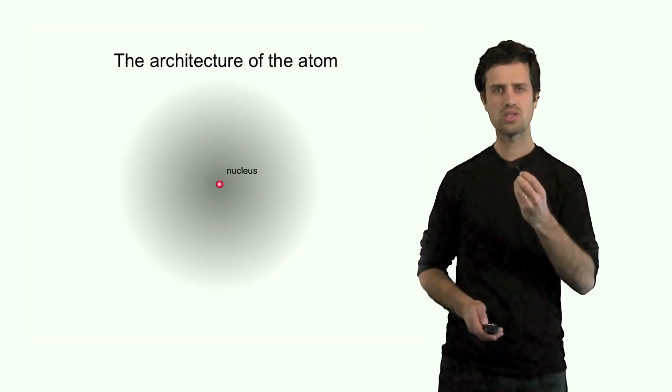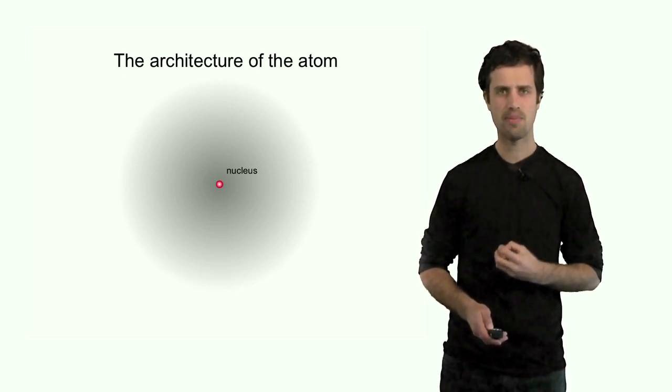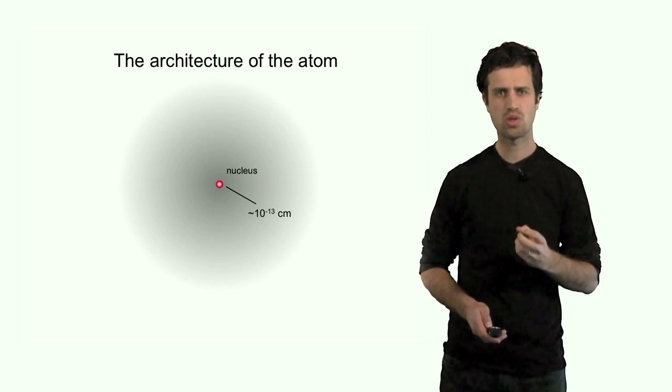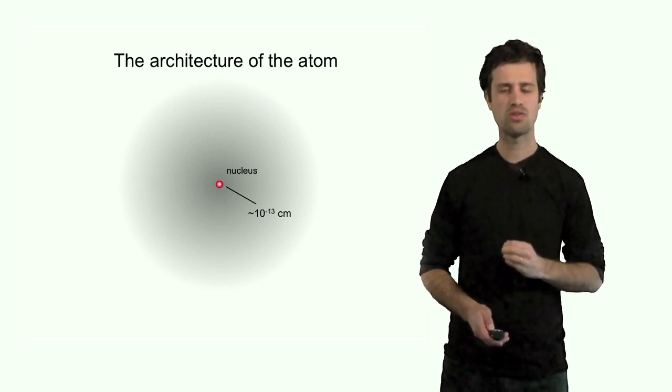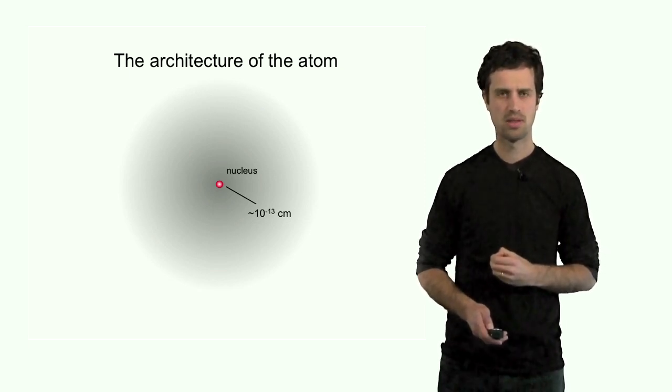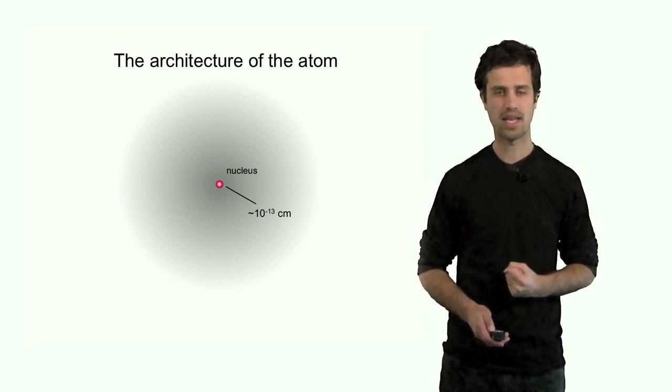So the nucleus is the center part of the atom. And we saw that the size of the nucleus is on the order of a femtometer, or 10⁻¹³ centimeters. The atom as a whole, however, is a lot larger than that.